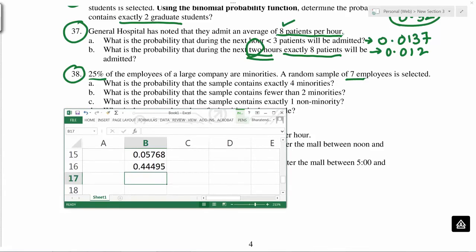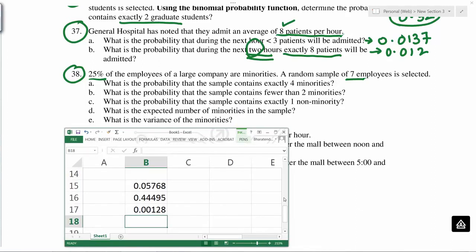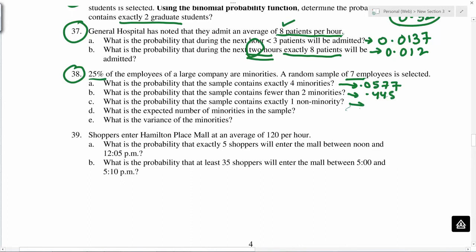See, exactly one non-minority. Equals, exactly one, n is still seven, and non-minority means the remaining 75 percent, because 25 percent is minority. So this will be 0.75 and false.